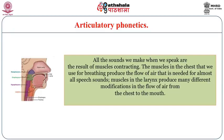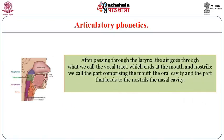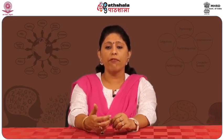Articulatory phonetics: all the sounds we make when we speak are the result of muscle contraction. The muscles in the chest used for breathing produce the flow of air needed for almost all speech sounds. Muscles in the larynx produce many different modifications in the flow of air from the chest to the mouth. After passing through the larynx, the air goes through the vocal tract, which ends at the mouth and nostrils — we call these the oral cavity and the nasal cavity. We have a large and complex set of muscles that produce changes in the shape of the vocal tract, and the study of the different parts involved is called articulatory phonetics.